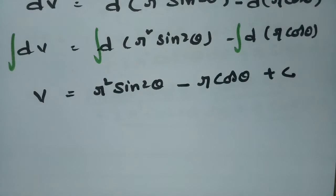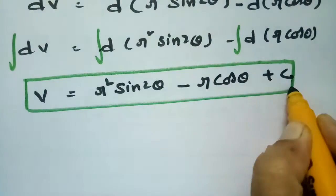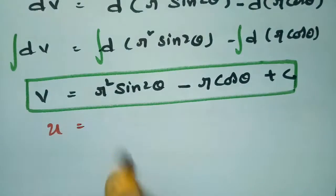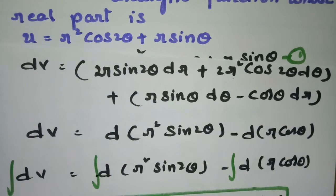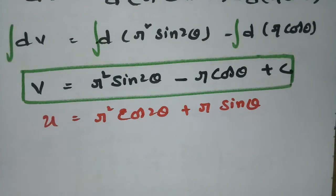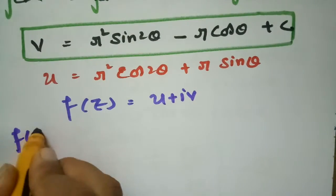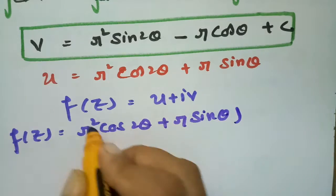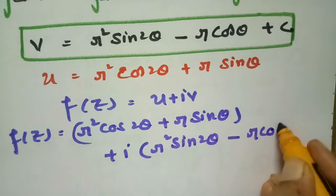Now f(z) = u + iv. We have the real part u = r² cos2θ + r sinθ from the question, and the imaginary part v = r² sin2θ - r cosθ + c. So f(z) = (r² cos2θ + r sinθ) + i(r² sin2θ - r cosθ + c).